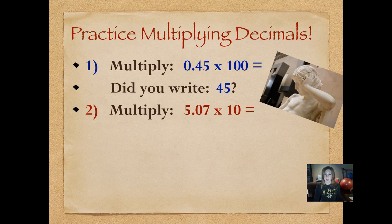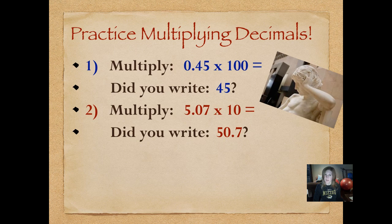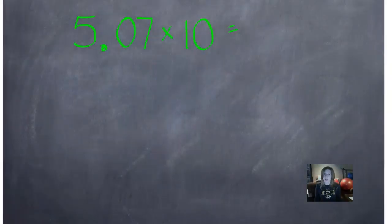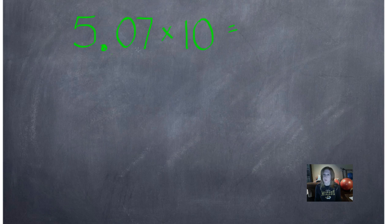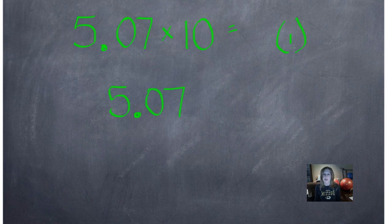Number two: multiply 5 and 7 hundredths by 10. Pause and push play when you're ready. Did you write 50 and 7 tenths? Let's see how we did that one. Step one is to count how many zeros are in 10 — we have one zero. We're only counting the zeros in the multiplier (10, 100, or 1,000), not in the other number. So we have one zero; we'll put that in parentheses. As we rewrite 5 and 7 hundredths, we're going to move our decimal to the right one space. Our final answer is 50 and 7 tenths.